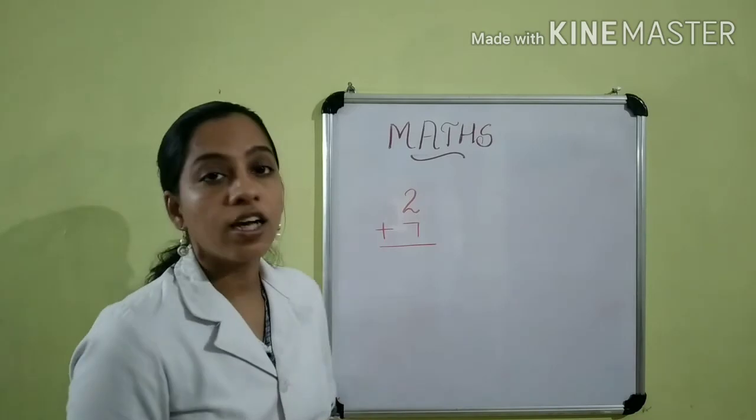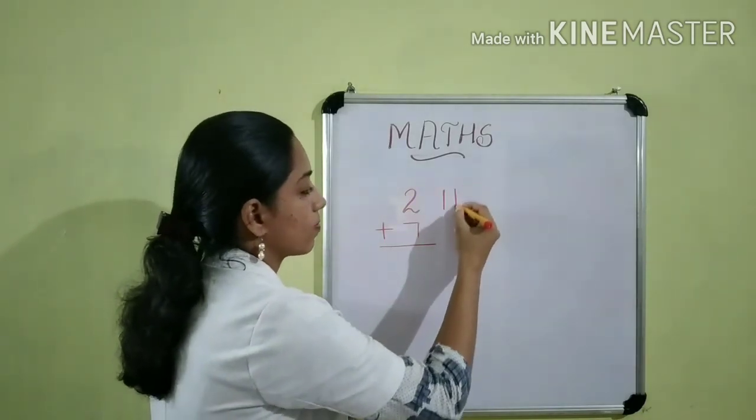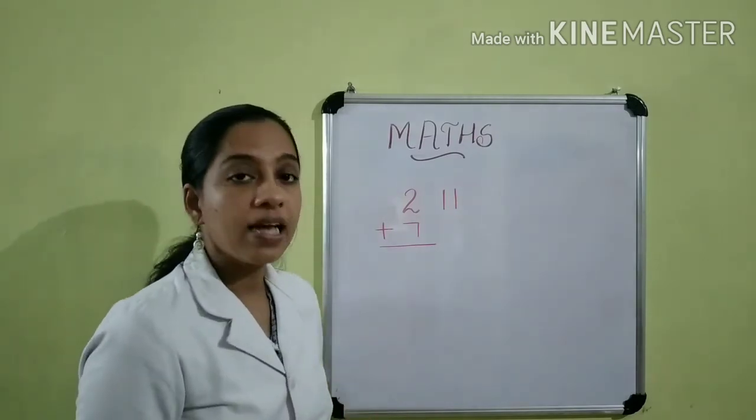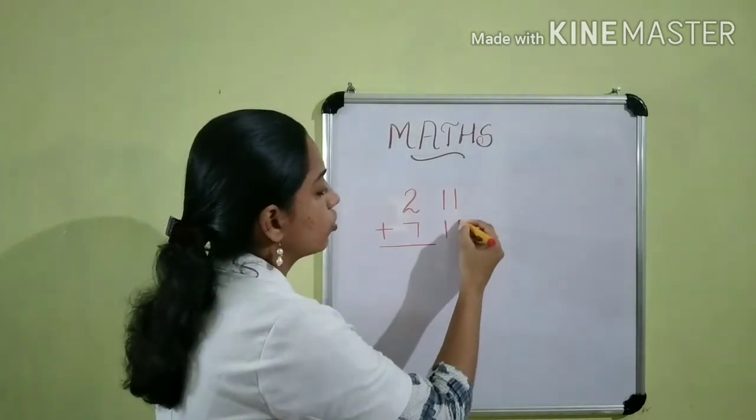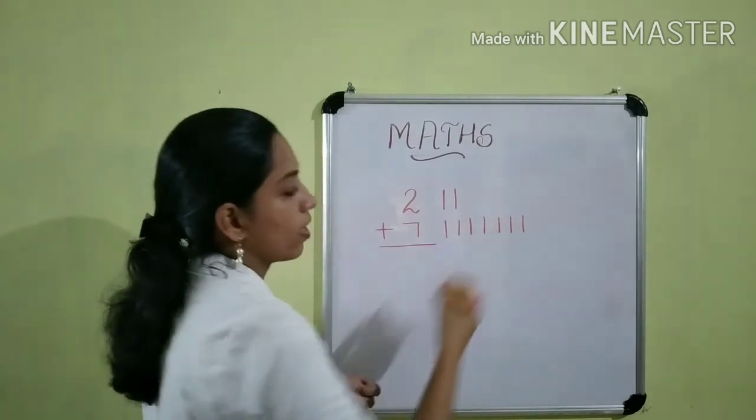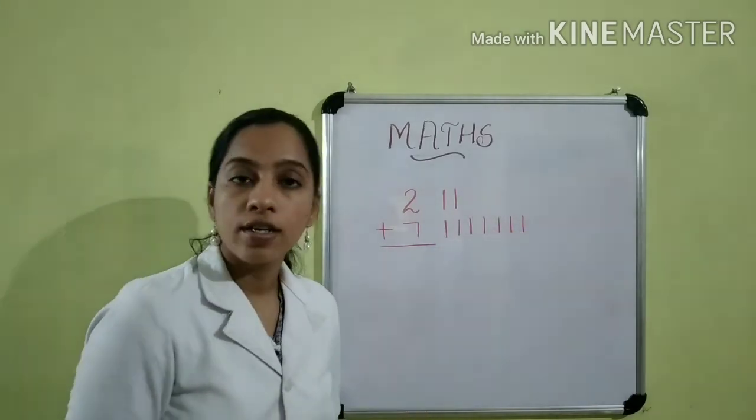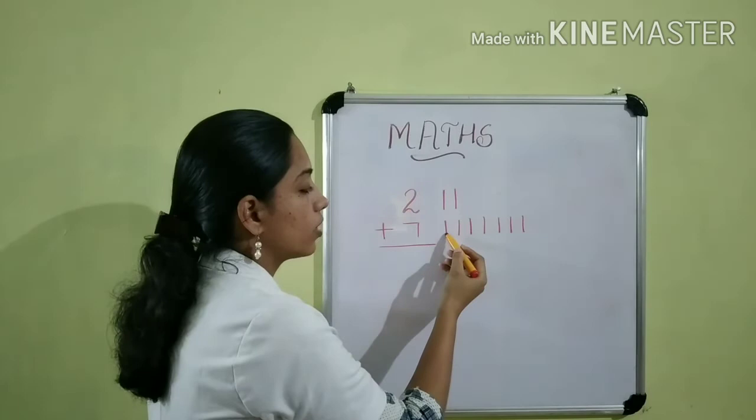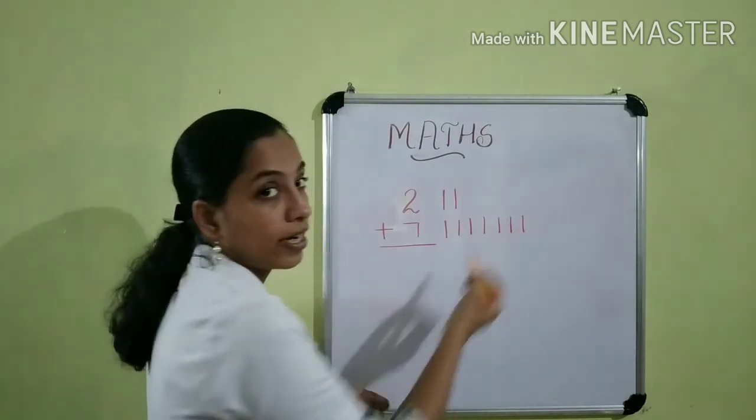The first number, two. So, we can draw two lines. The next number, seven. So, we can draw seven lines. One, two, three, four, five, six, seven.